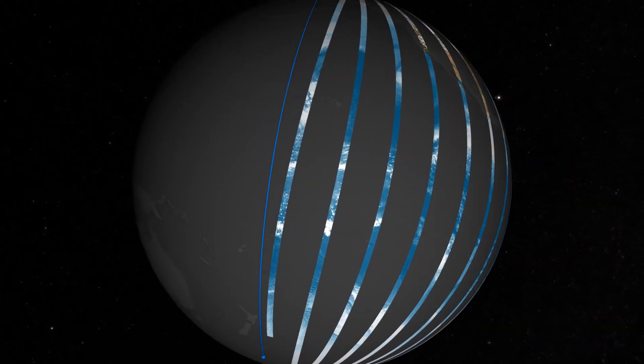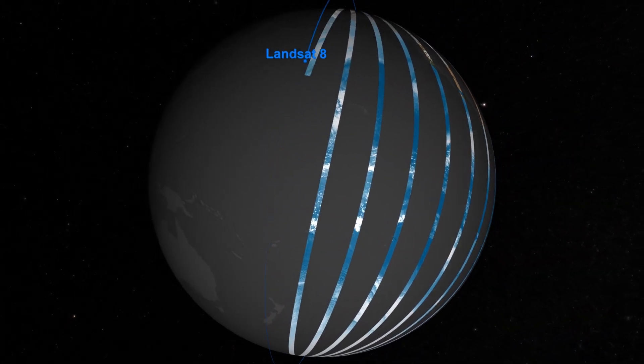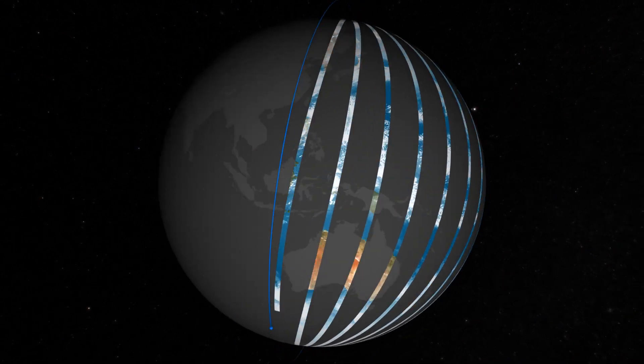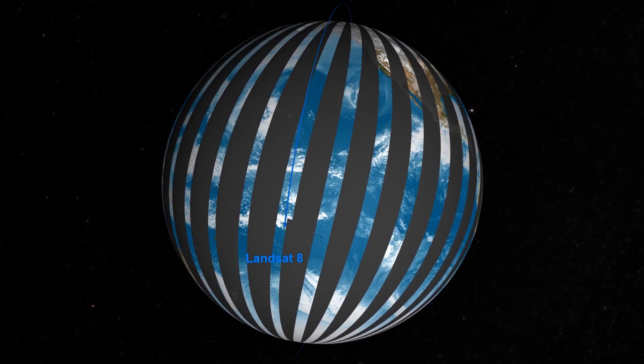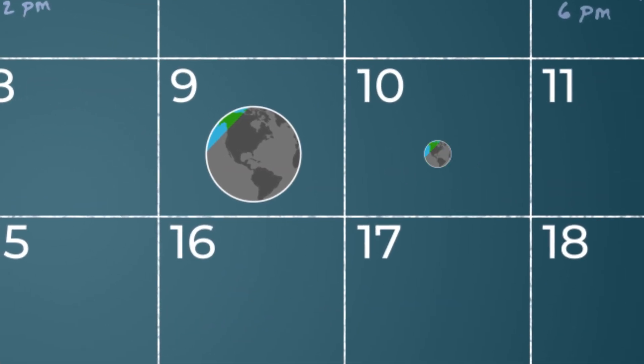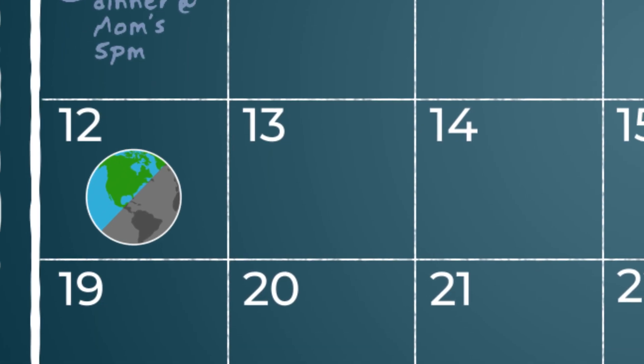It will take Landsat 9 and its sister satellite, Landsat 8, eight days to image all of Earth's land and coastal areas. That means we get a complete picture of Earth every eight days.